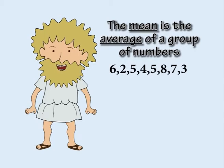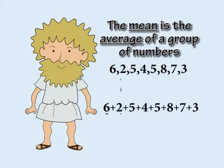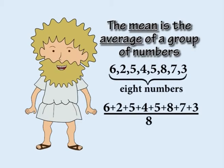Finally, the mean is the average of a group of numbers. To calculate the mean, you add the numbers together and divide by how many numbers there are.